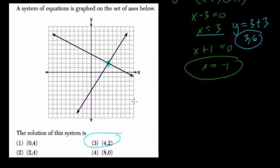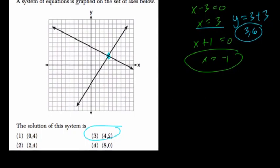Anytime they ask you for a solution to the system, or what ordered pairs is the solution, they're asking you when do the functions or lines cross.